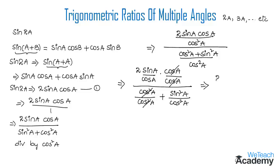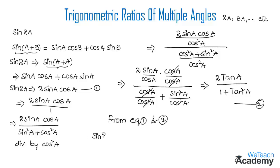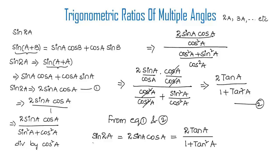After simplification, the numerator becomes 2sin(a)/cos(a), which is 2tan(a). The denominator becomes 1 + sin²(a)/cos²(a), which is 1 + tan²(a). So this is equation 2. From equations 1 and 2, sin(2a) = 2sin(a)cos(a) = 2tan(a) / (1 + tan²(a)). Make a note of these formulas.